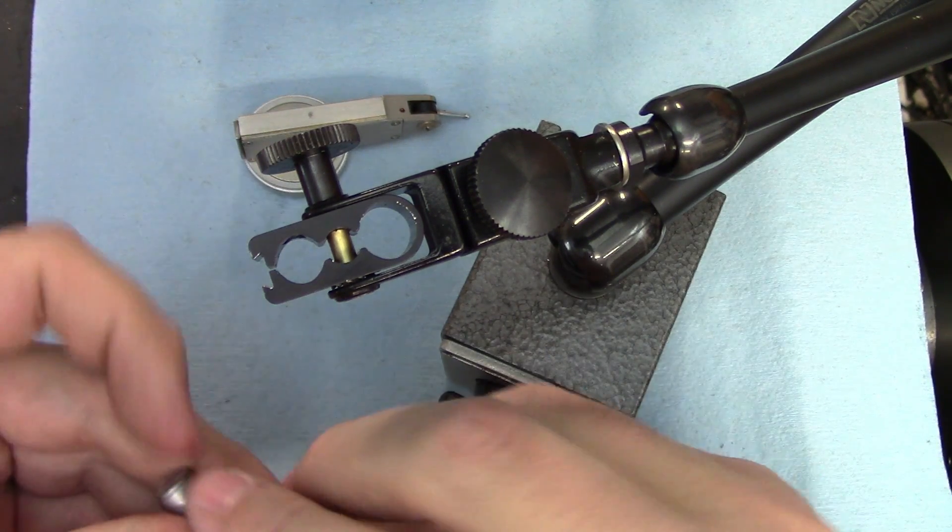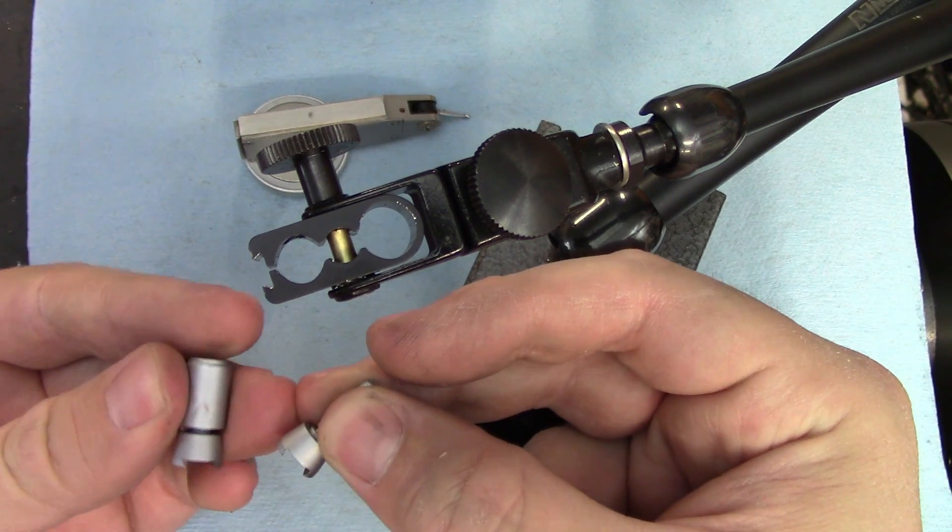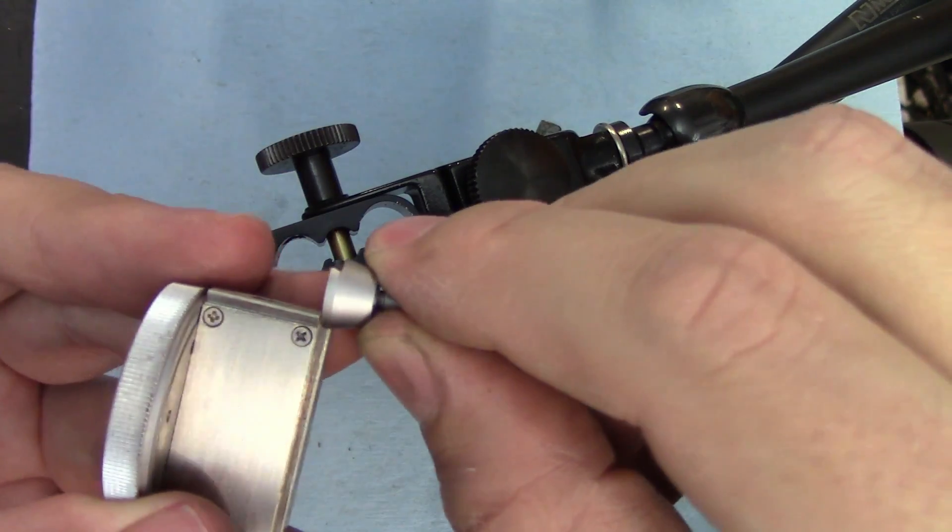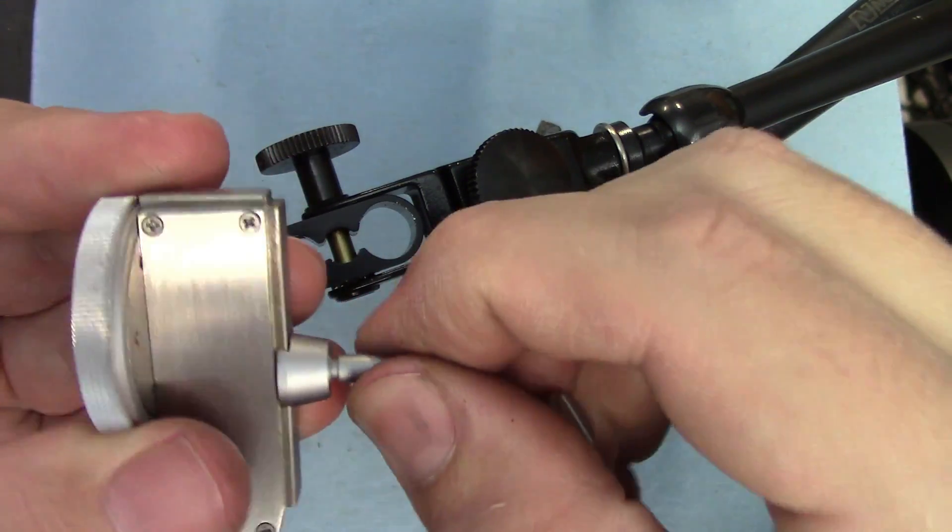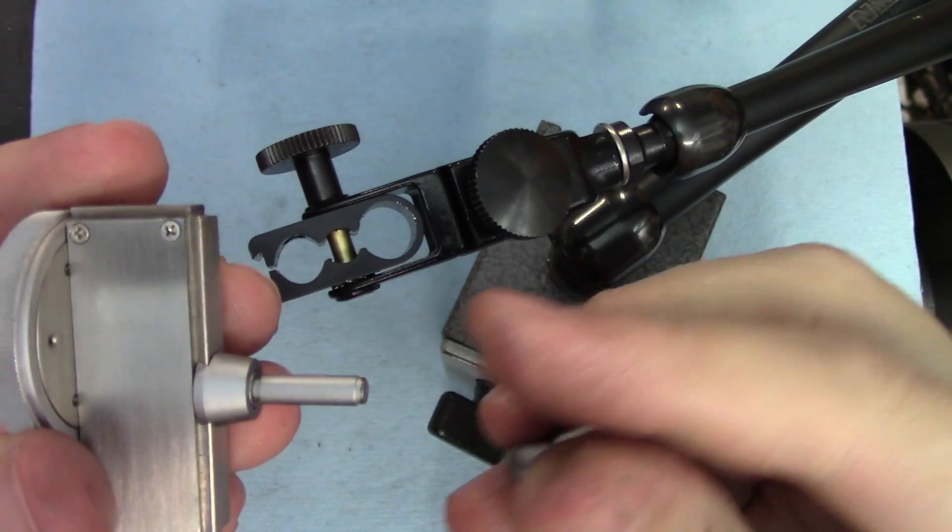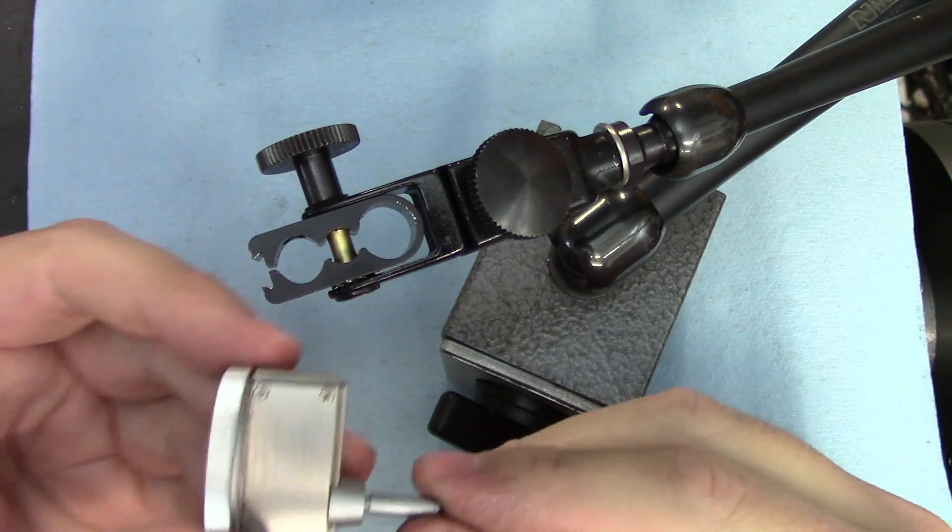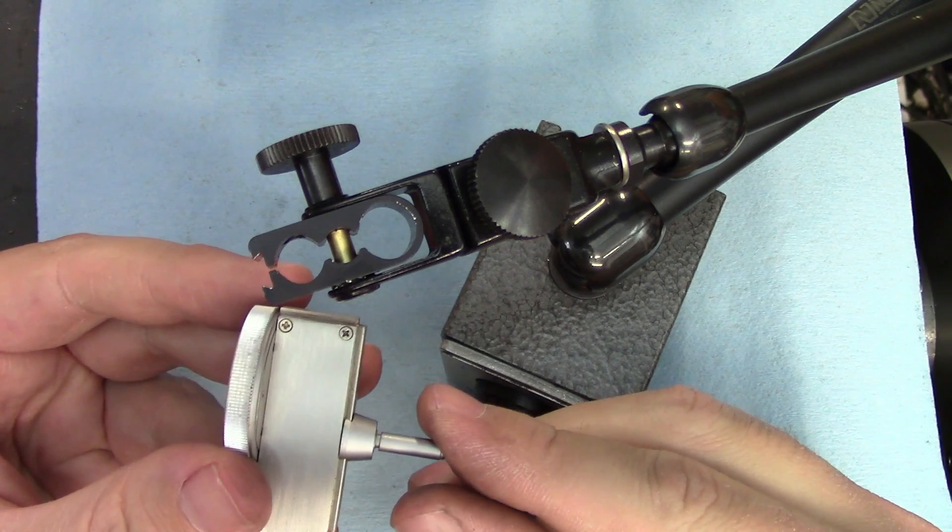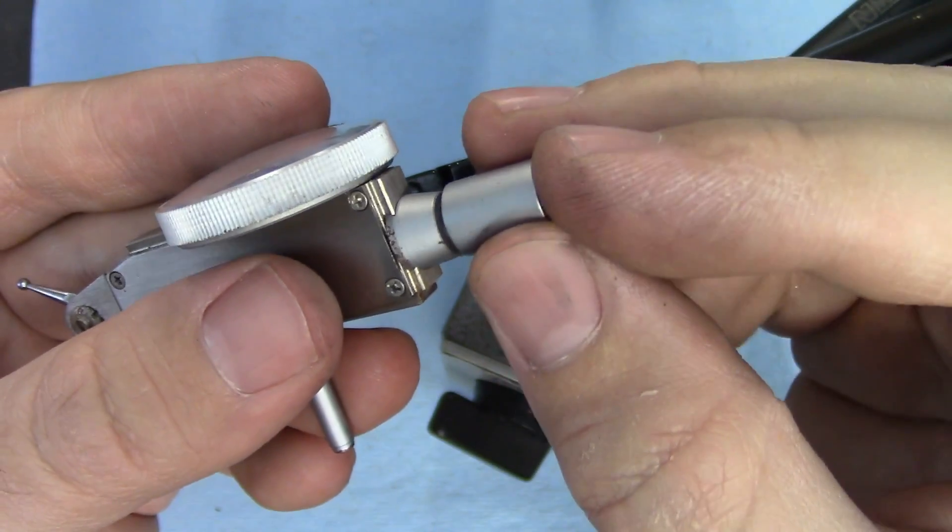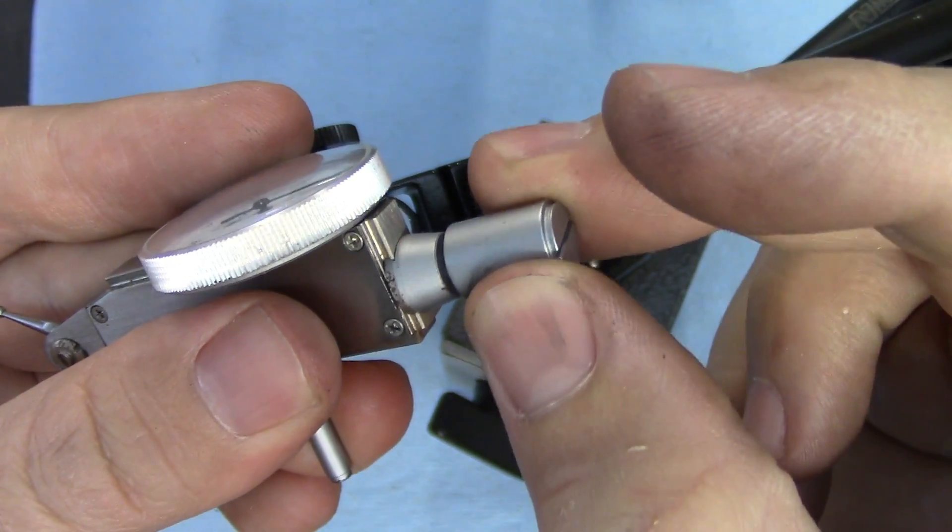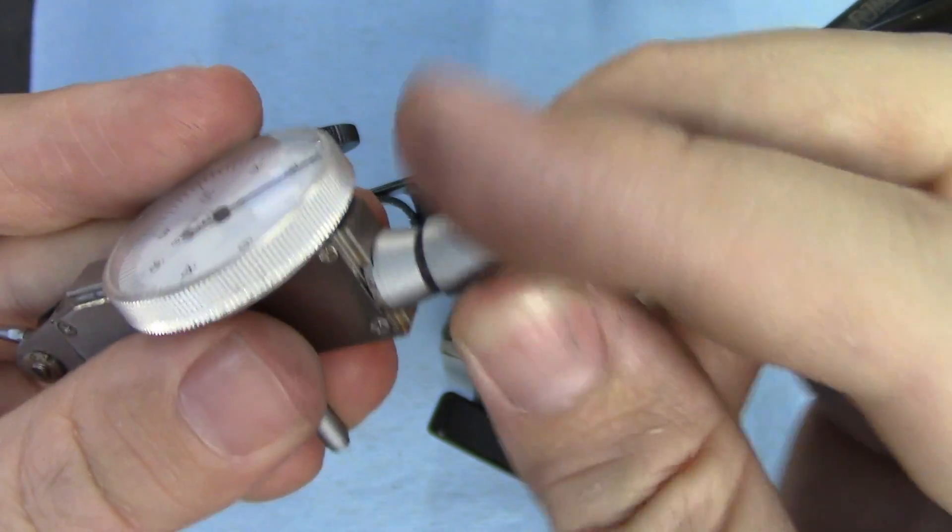Most dial test indicators also come with a couple of posts with dovetailed ends. These slip onto one of the dovetails and then get tightened by screwing in the threaded lug. Then that gets held in the indicator base, just like the adapter for the lug back indicators. On the cheap imports, these dovetails are quite sloppy to say the least, but they still work.